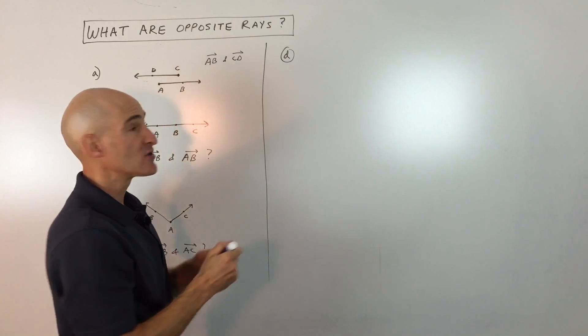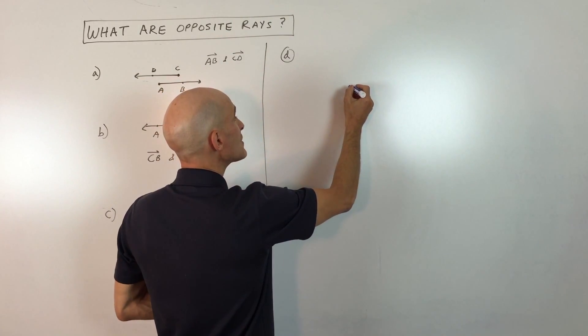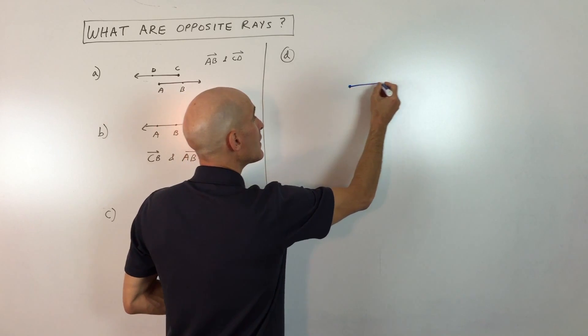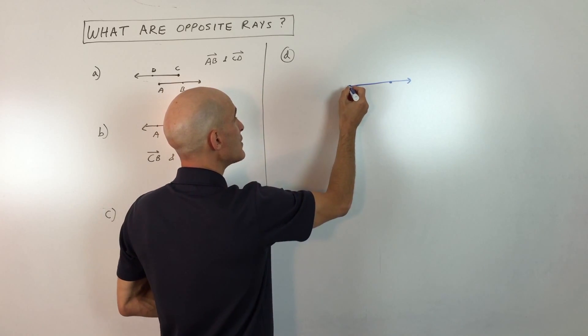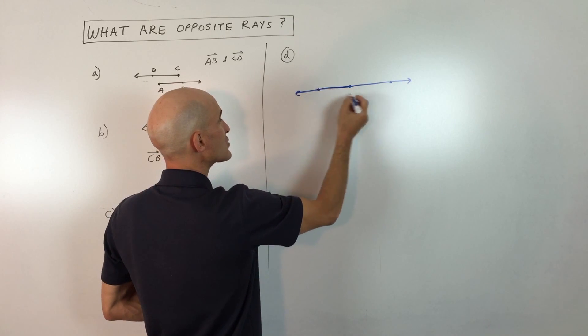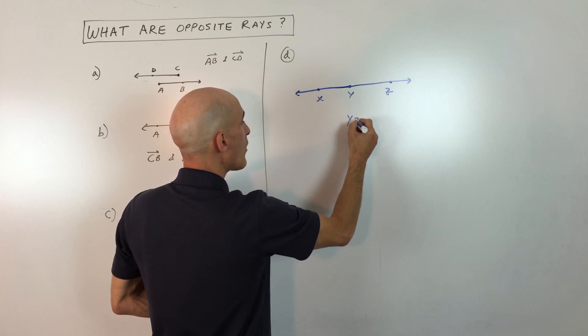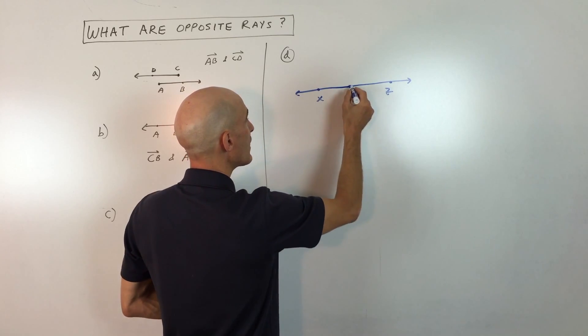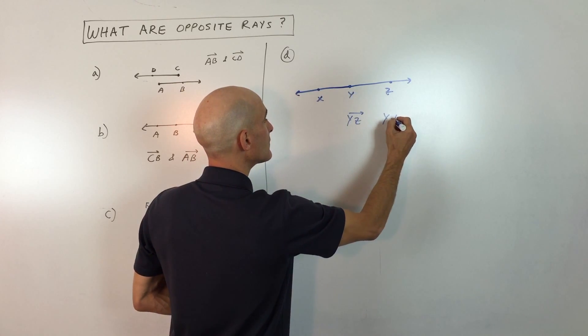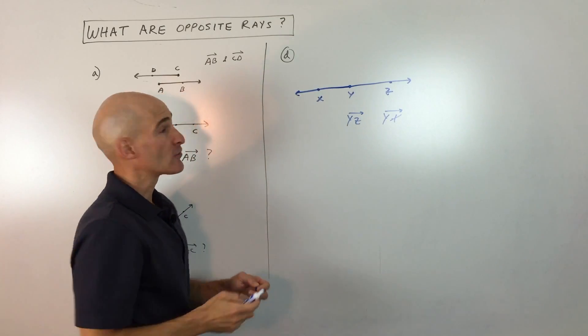And in letter D, let me show you exactly what opposite rays are. So for example, you're starting here and you're going this direction and then you're starting here and you're going this direction. Let's just label this X, Y, and Z. So ray YZ and ray YX, like that, these are opposite rays.